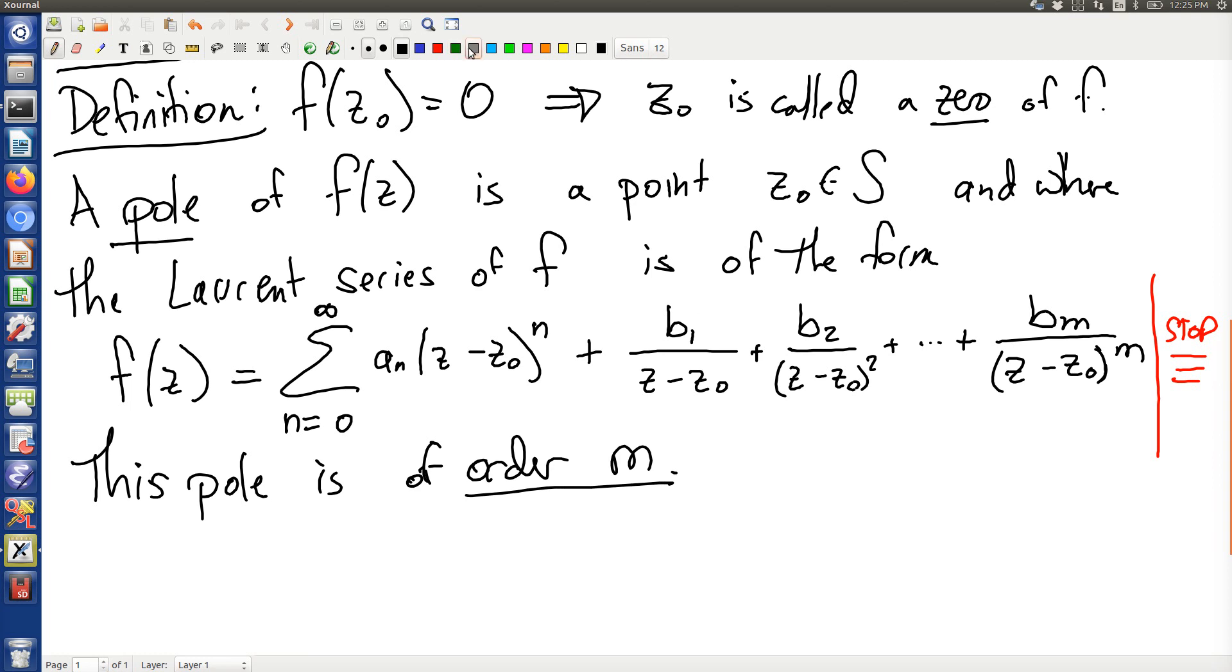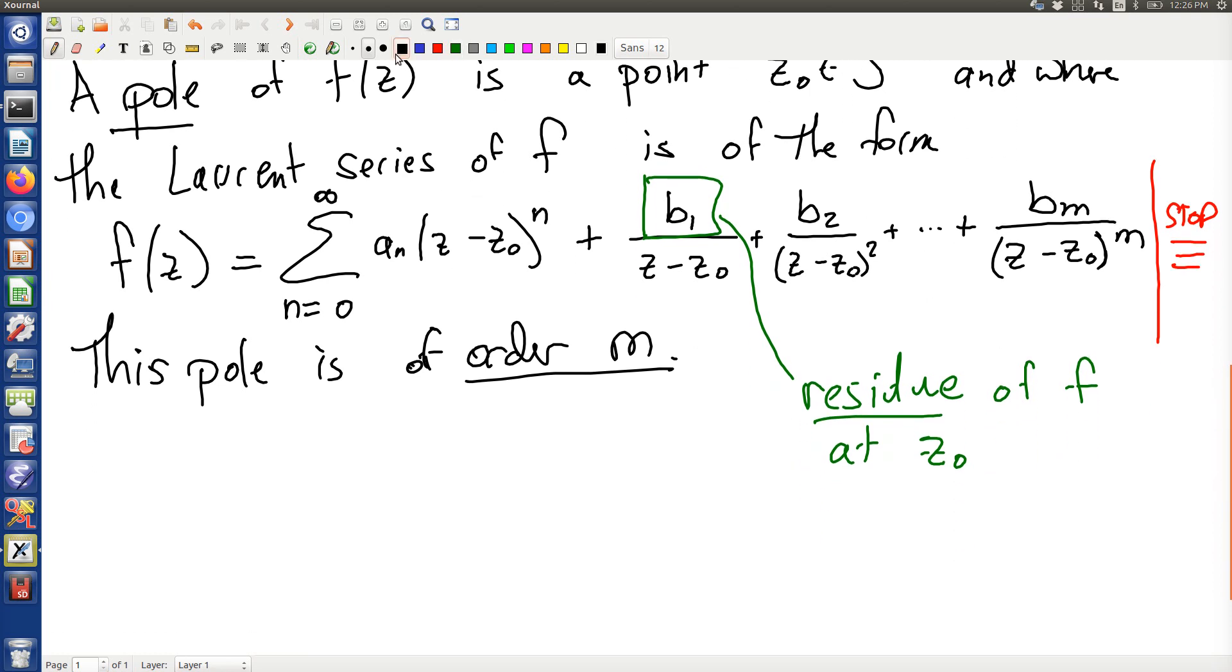The coefficient b₁ is special. This is called the residue of f at z₀. The residue is kind of special because there's a lemma.